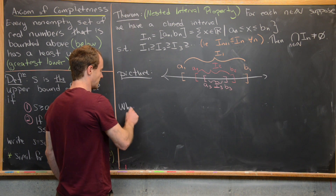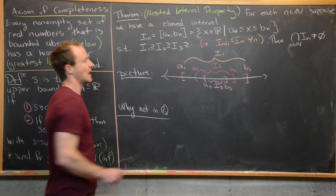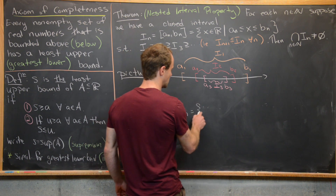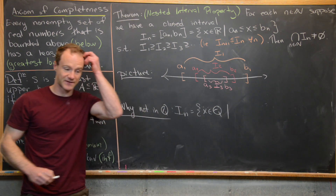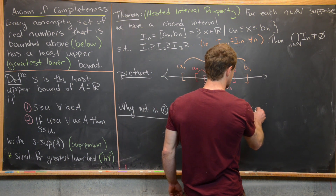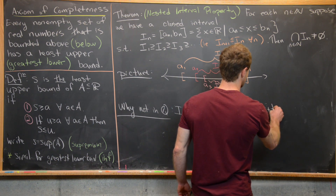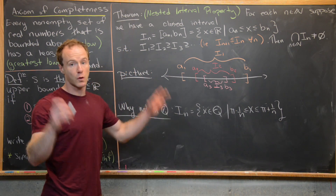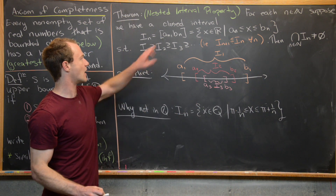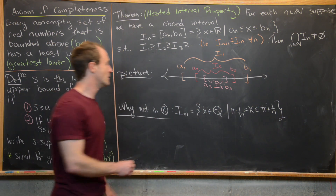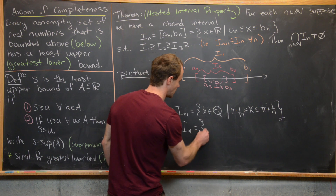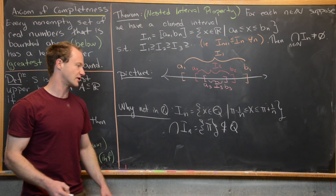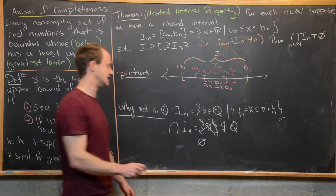Next, let's see why this doesn't work in the rational numbers. Take the example where I_N equals the set of rationals X satisfying π − 1/N ≤ X ≤ π + 1/N. These sets are nested the same way, but their intersection along the real numbers would be the singleton {π}, which is not rational. So within the rationals, the intersection is the empty set.